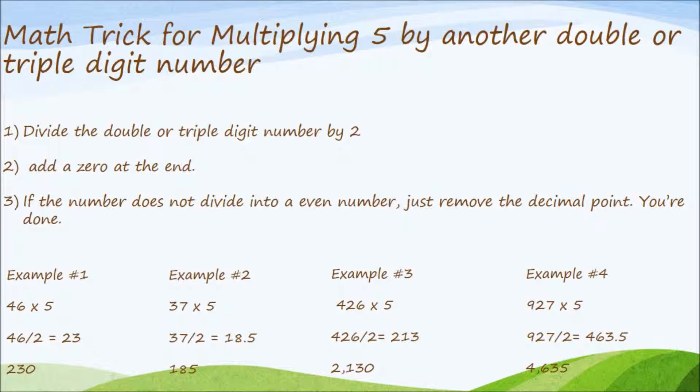Second example. We have 37 times 5. We're going to take 37 divided by 2, which is equal to 18.5. Remove the decimal. Final answer, 185.